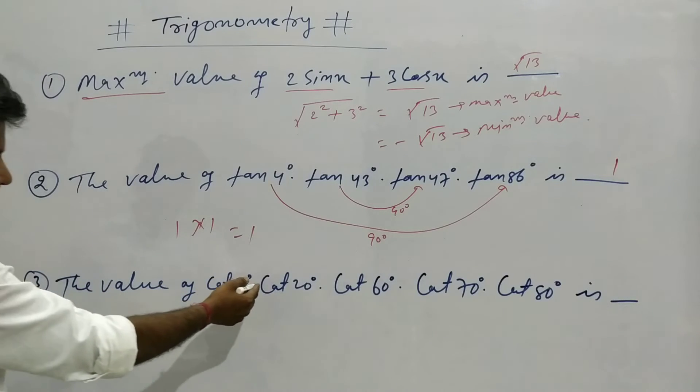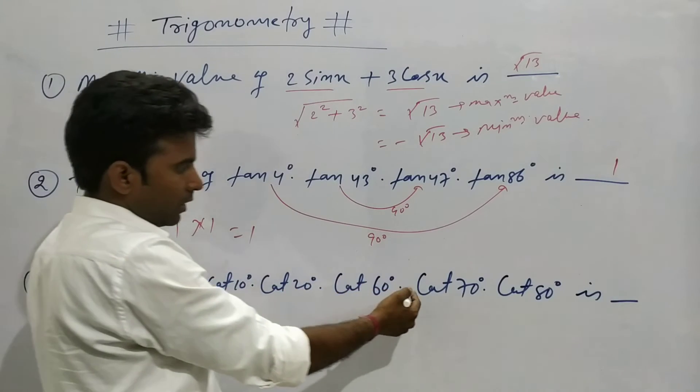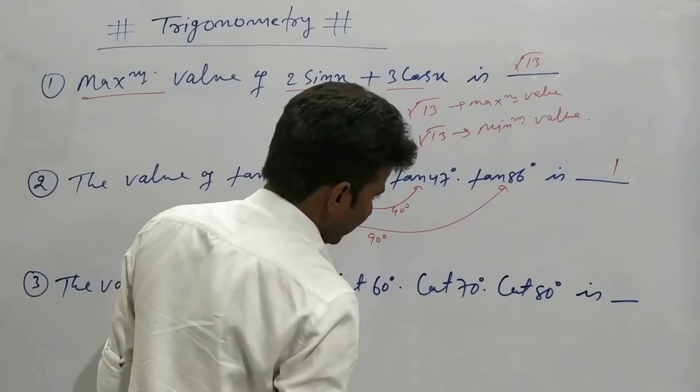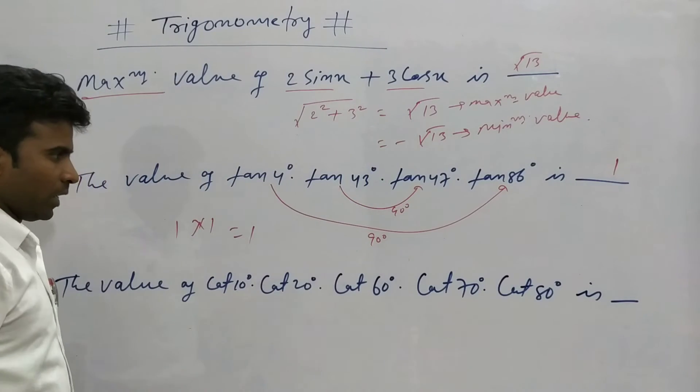The third question: find the value of cot10° × cot20° × cot60° × cot70° × cot80°. We use the same approach.